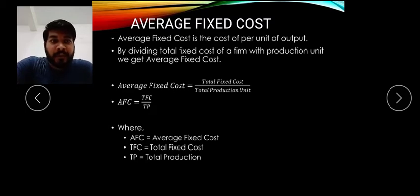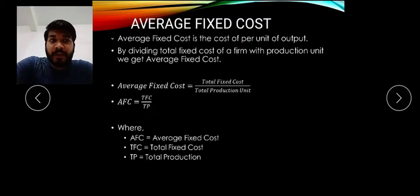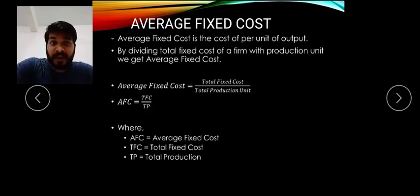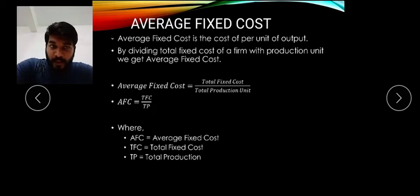Average fixed cost is the cost per unit of output, obtained by dividing the total fixed cost of a firm by the number of production units. The formula to remember is: Average Fixed Cost equals Total Fixed Cost divided by Total Production Units. In short form: AFC = TFC / TP, where AFC is average fixed cost, TFC is total fixed cost, and TP is total production.